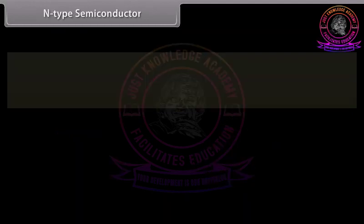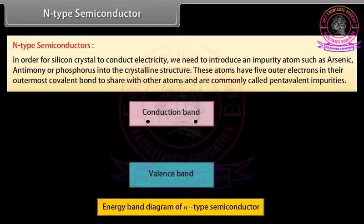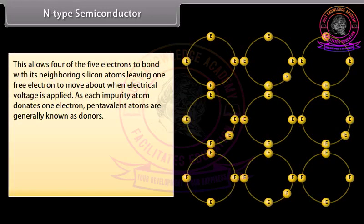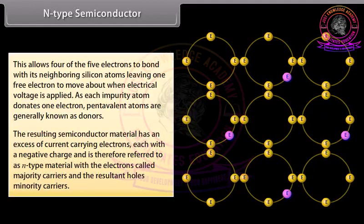N-type semiconductors: in order for a silicon crystal to conduct electricity, we introduce an impurity atom such as arsenic, antimony, or phosphorus into the crystalline structure. These atoms have 5 outer electrons, allowing 4 to bond with neighboring silicon atoms and leaving one free electron to move about when electrical voltage is applied. As each impurity atom donates one electron, pentavalent atoms are called donors. The resulting material has an excess of electrons — majority carriers — with the holes as minority carriers.